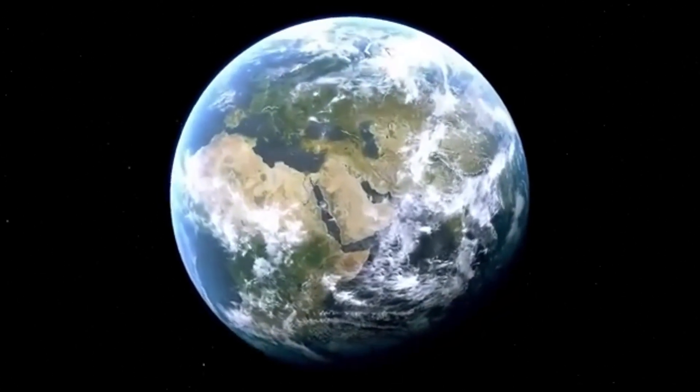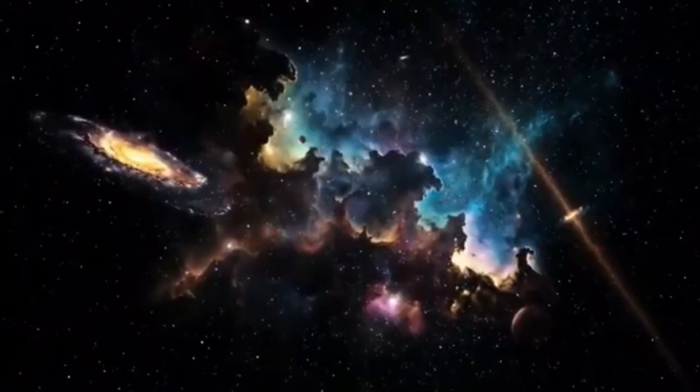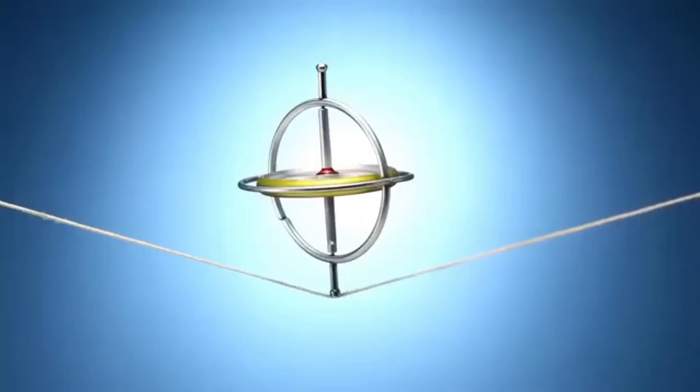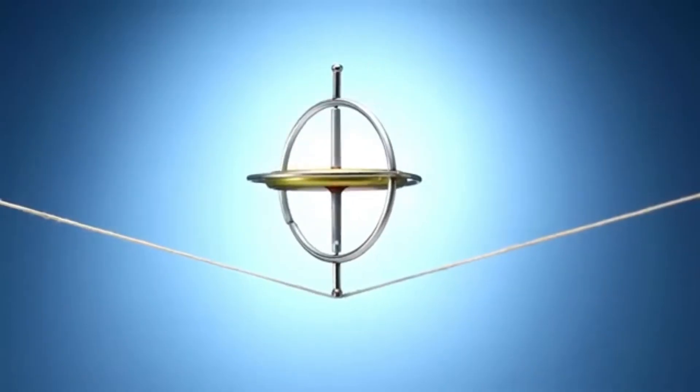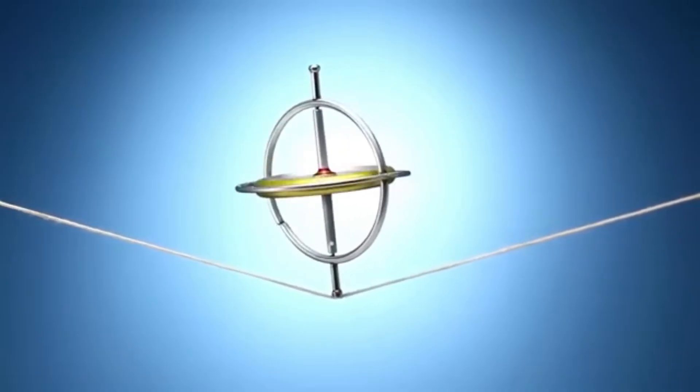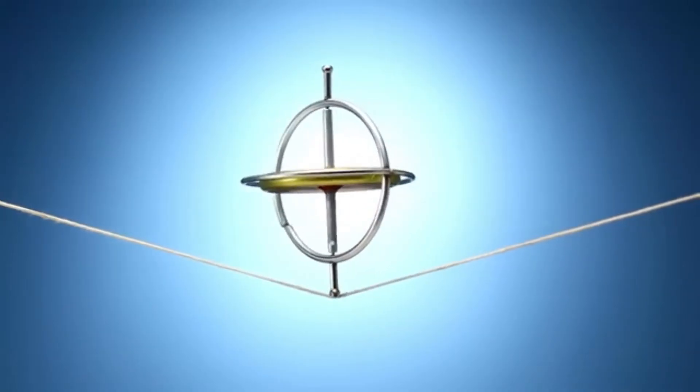A few years later, Voyager 2 reached Uranus, a mysterious world with an astonishing 98-degree tilt in its spin axis. It took breathtaking images of the ice giant, revealing two new rings and 11 previously undiscovered moons.